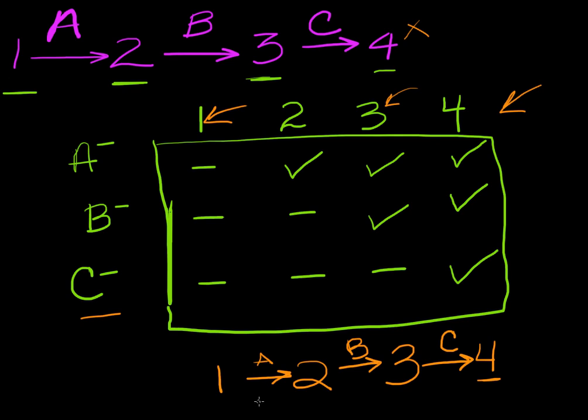So that's how to solve one of these Beadle and Tatum problems. We can go forwards or backwards in it. We can go from being able to predict what will rescue by knowing the pathway, or we can predict the pathway by knowing what rescues which different genotypes.